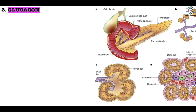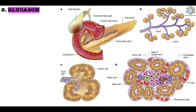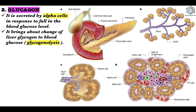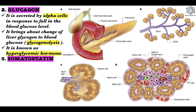The second pancreatic hormone is glucagon, secreted by the alpha cells in response to a fall in blood glucose level. It brings about conversion of liver glycogen to blood glucose — a process called glycogenolysis. Glucagon is known as a hyperglycemic hormone. Excess glucose in the blood suppresses secretion of glucagon, whereas a fall in glucose level starts glucagon production.